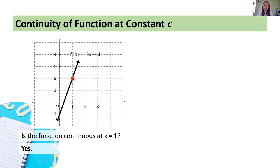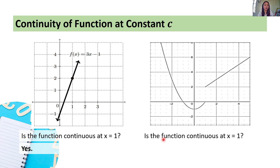Let's have another example. The question again is: is the function continuous at x equals 1? Let's say we have a pen and we trace the graph. At x equals 1, we'll notice that our pen will lift — and this is the continuation of the drawing. This means there is a jump here. Since there is a jump, the function is not continuous at x equals 1.